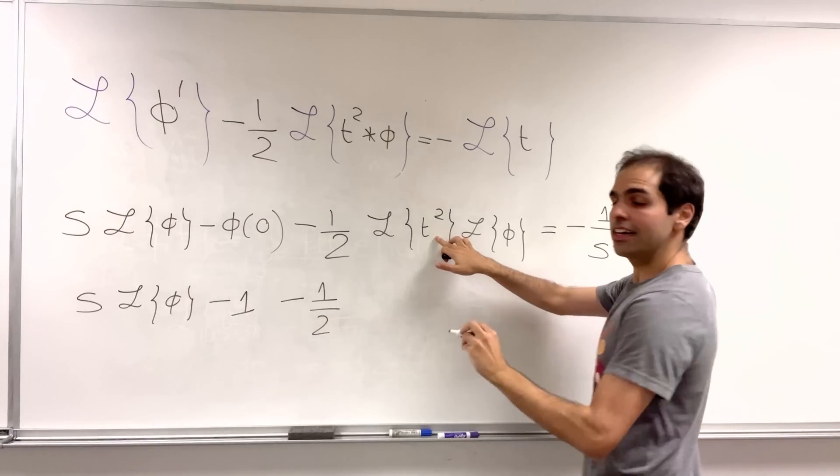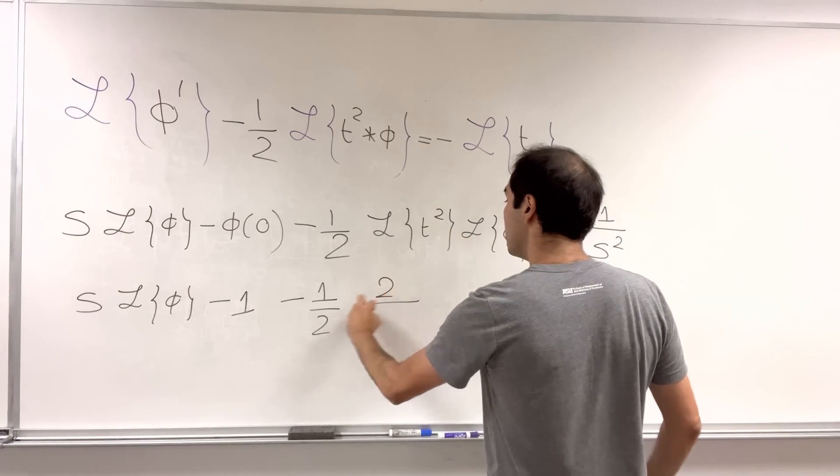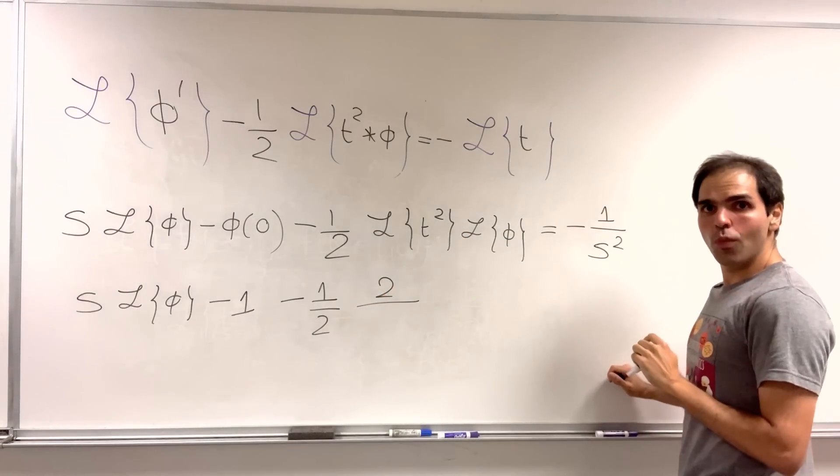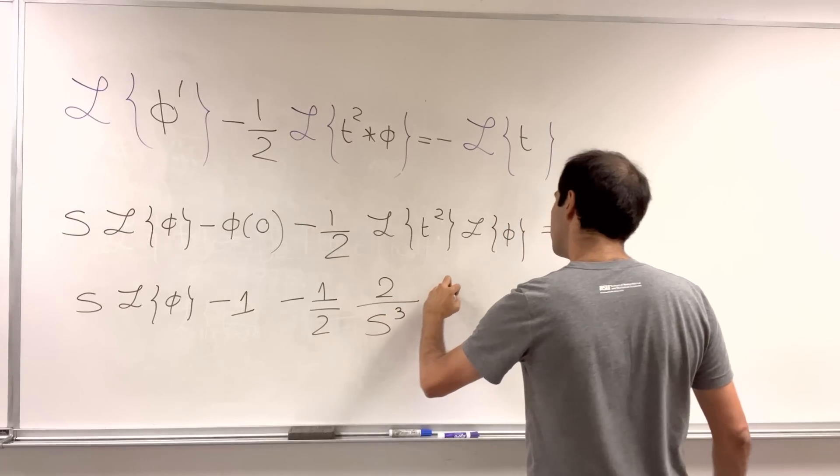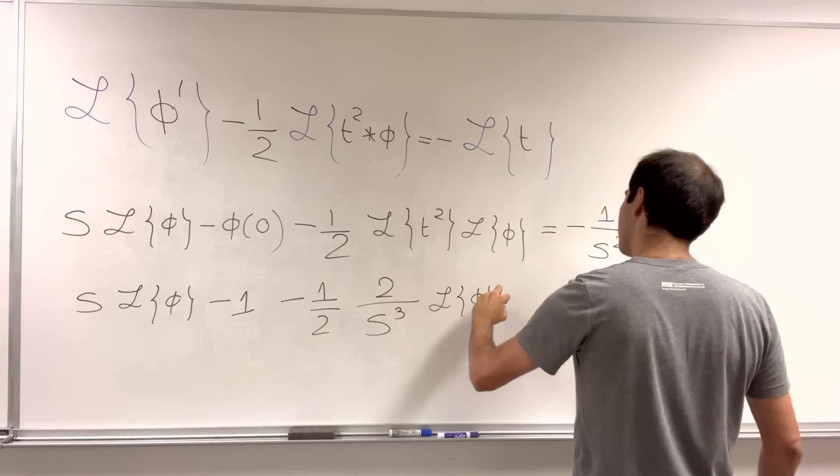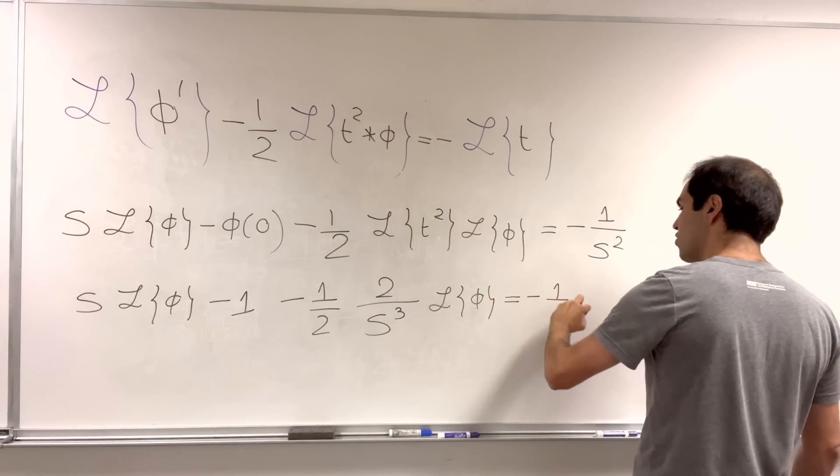So, L of t squared, again, two factorial, which is two, and you add one to the exponent. So, s cubed times L of phi equals minus one over s squared.